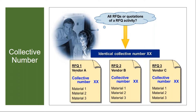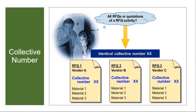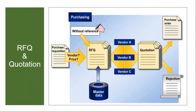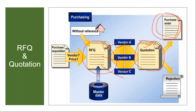Let's say you want to procure a material and you have three prospective vendors — vendor A, vendor B, vendor C. You will create a request for quotation for these three vendors, and to link them together, you give a collective number. You send these requests for quotation to the vendors, and they supply their quotations. You enter the quotation details in the system, do a price comparison, and select the best vendor. For that vendor you give the purchase order, and for the other two vendors you send the rejection — their quotations are rejected.